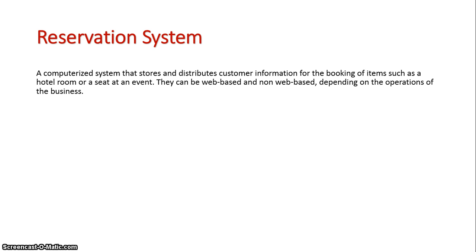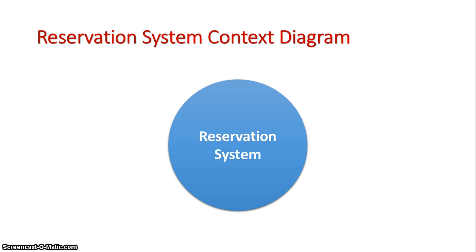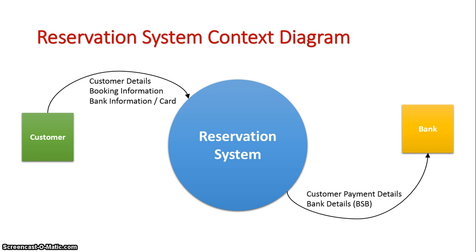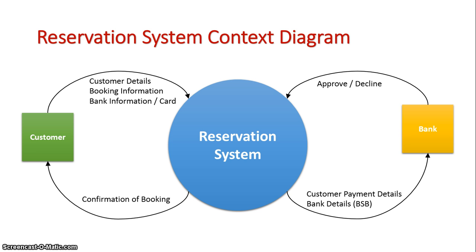Let's have a look at how this system may work in a context diagram. We have our reservation system and the customer contacts the system, entering their booking data and providing a credit card for reference. Once registered, the system contacts the bank. Some booking systems do the financial transaction straight away, while others use the card as a reference and don't charge until the service is used. Either way, the bank will approve or decline the transaction, and if all is okay, the booking is confirmed.